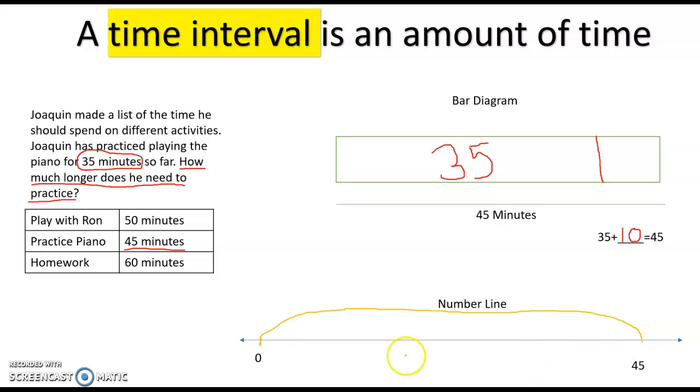So 45 is my total, but he's not there yet. So what do I need to take away to get the missing time that he hasn't practiced yet? So 45 minus that missing time equals the 35 he's already done. We're going to count backwards.